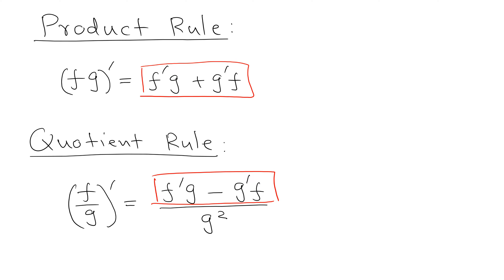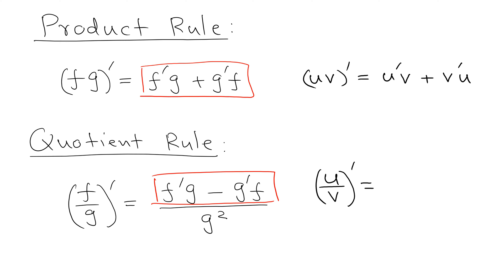We're also going to make one more change. In most textbooks, we normally don't remember the product and quotient rules using f and g — we use the uv form, which is the most common way. It also makes sense because when you learn integration by parts, the uv form is exactly what's used there. So using uv notation: the product rule is (uv)' = u'v + v'u. For the quotient rule, (u/v)' = u'v − v'u, all divided by v².